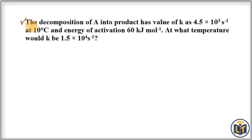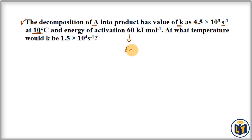The problem says that the decomposition of reactant A into product has a rate constant K of 4.5 multiplied by 10 to power 3 per second at a temperature of 10 degrees Celsius. The energy of activation is given as 60 kJ per mole. The question asks at what temperature the rate constant will be 1.5 multiplied by 10 to power 4 per second.